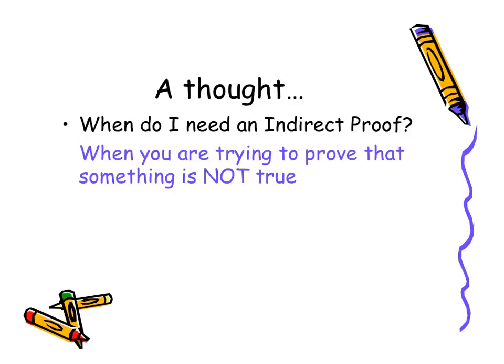So how do we know when to use an indirect proof? Well, when we're trying to prove something that's not true. So if our prove statement says prove that this is not true, we know that an indirect proof is what we're going to be using.